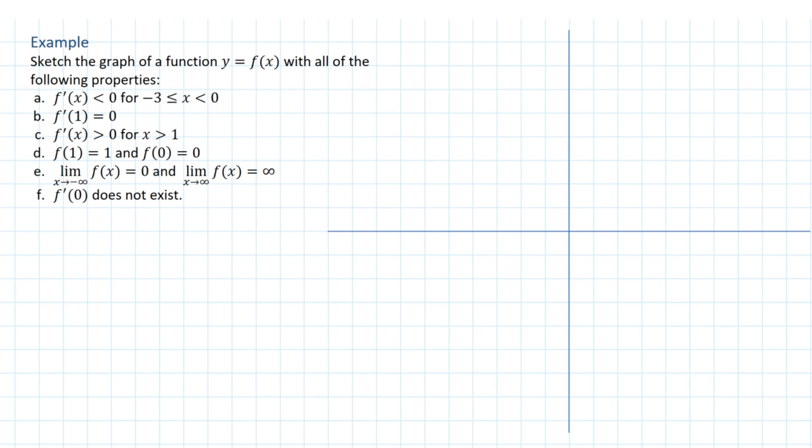f(0) = 0, and then we have two limit conditions. As x goes to negative infinity, our function goes to 0, so there'll be an asymptote to the left at 0, and as x goes to infinity, our function goes to infinity, so the function just continually increases to the right. And we're also told that the derivative at 0 does not exist. So here's how we could draw that.